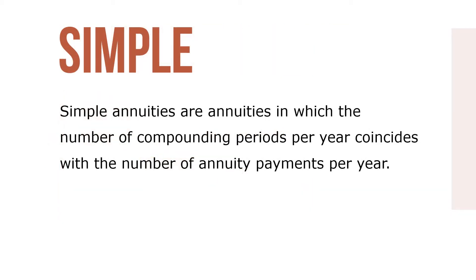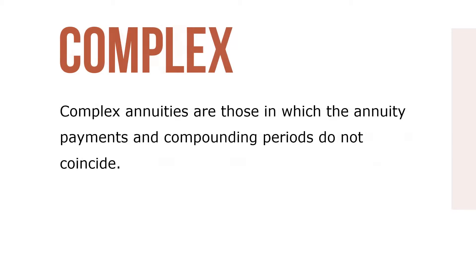Simple annuities are annuities in which the number of compounding periods per year coincides with the number of annuity payments per year. Complex annuities are those in which the annuity payments and compounding periods do not coincide.